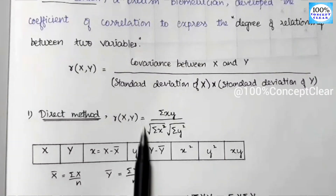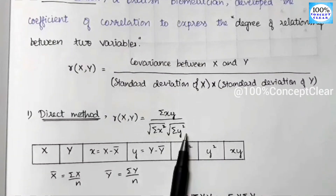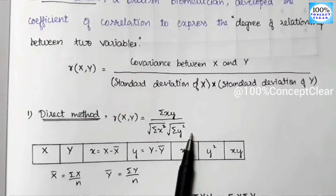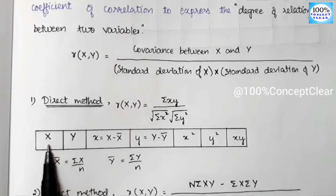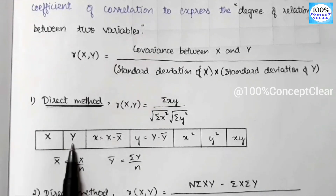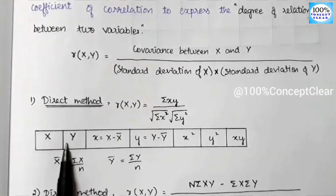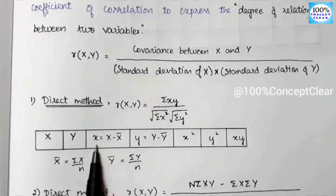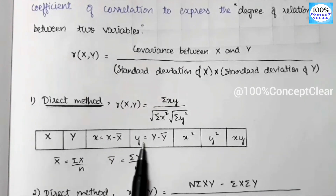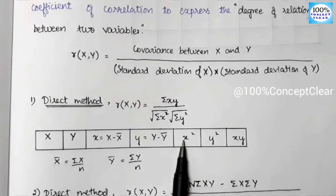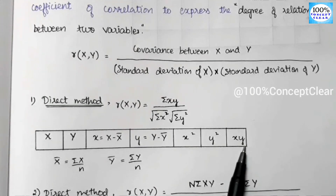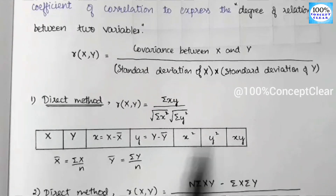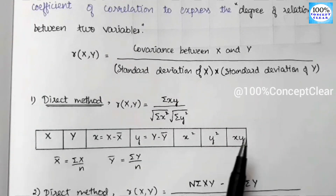When using the first formula, capital X and capital Y are given in the question. We calculate small x and small y, along with x-squared, y-squared, and xy, using these values to solve the problem.